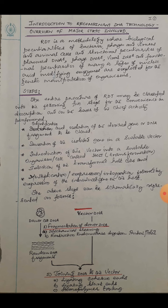Basically, it is a methodology where biological peculiarities of bacteria, phages and viruses and animal cells, then structural peculiarities of plasmid DNA, phage DNA, viral DNA, and functional peculiarities of many types of nucleic acid modifying enzymes are exploited for the genetic manipulation of organisms. From the definition, you can know that basically it involves genetic manipulation of an organism for the benefit and welfare of humans.